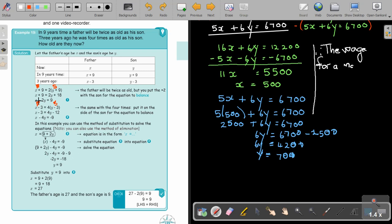And then I just solve it. Now in this case, I can, because there's one X, I can use substitution. And then I'm finding, I just substitute the value of Y in, and I find an answer. The father's age is 27, and the son's age is 9.